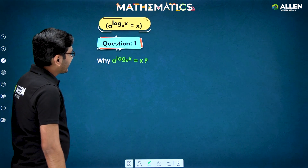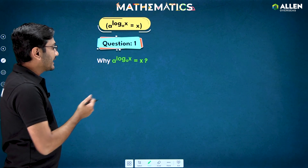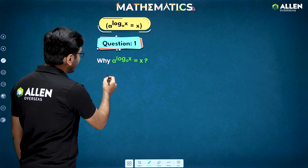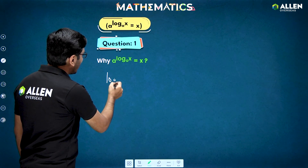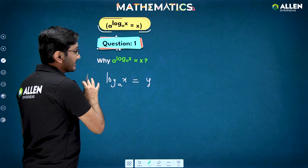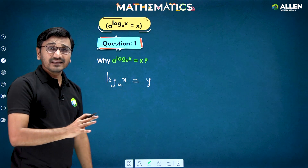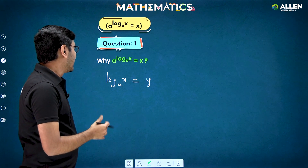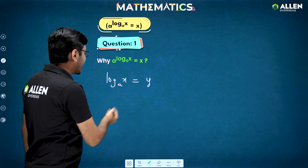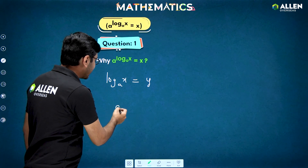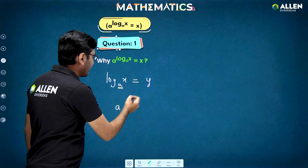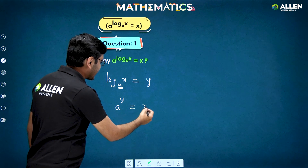Now let's see why we are getting a raised to log of x to the base a is equal to x. We know that if we assume log of x to the base a is equal to y, this is a logarithmic equation and we very well know that a logarithmic equation can be easily converted to exponential form: base a raised to the power y gives us x.